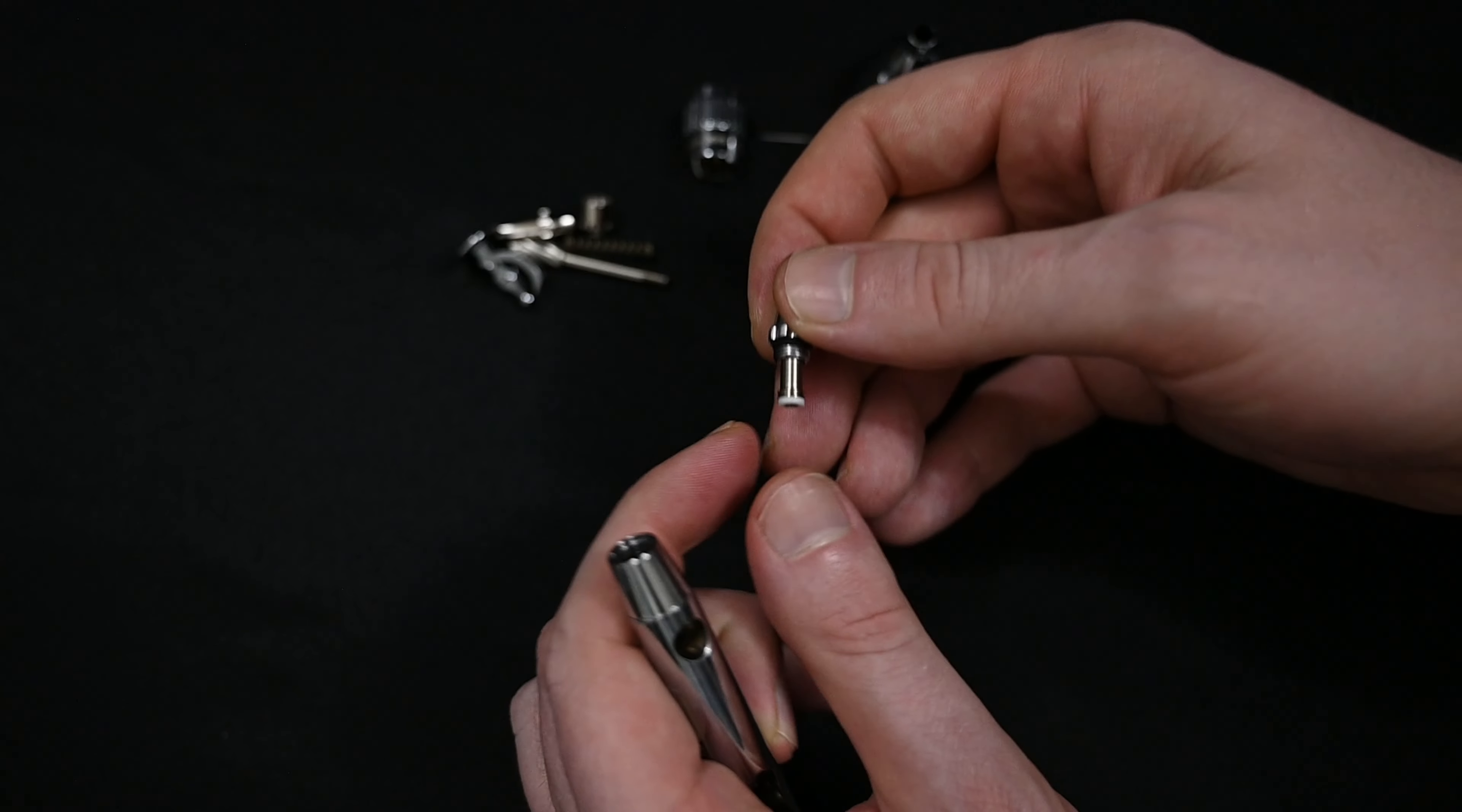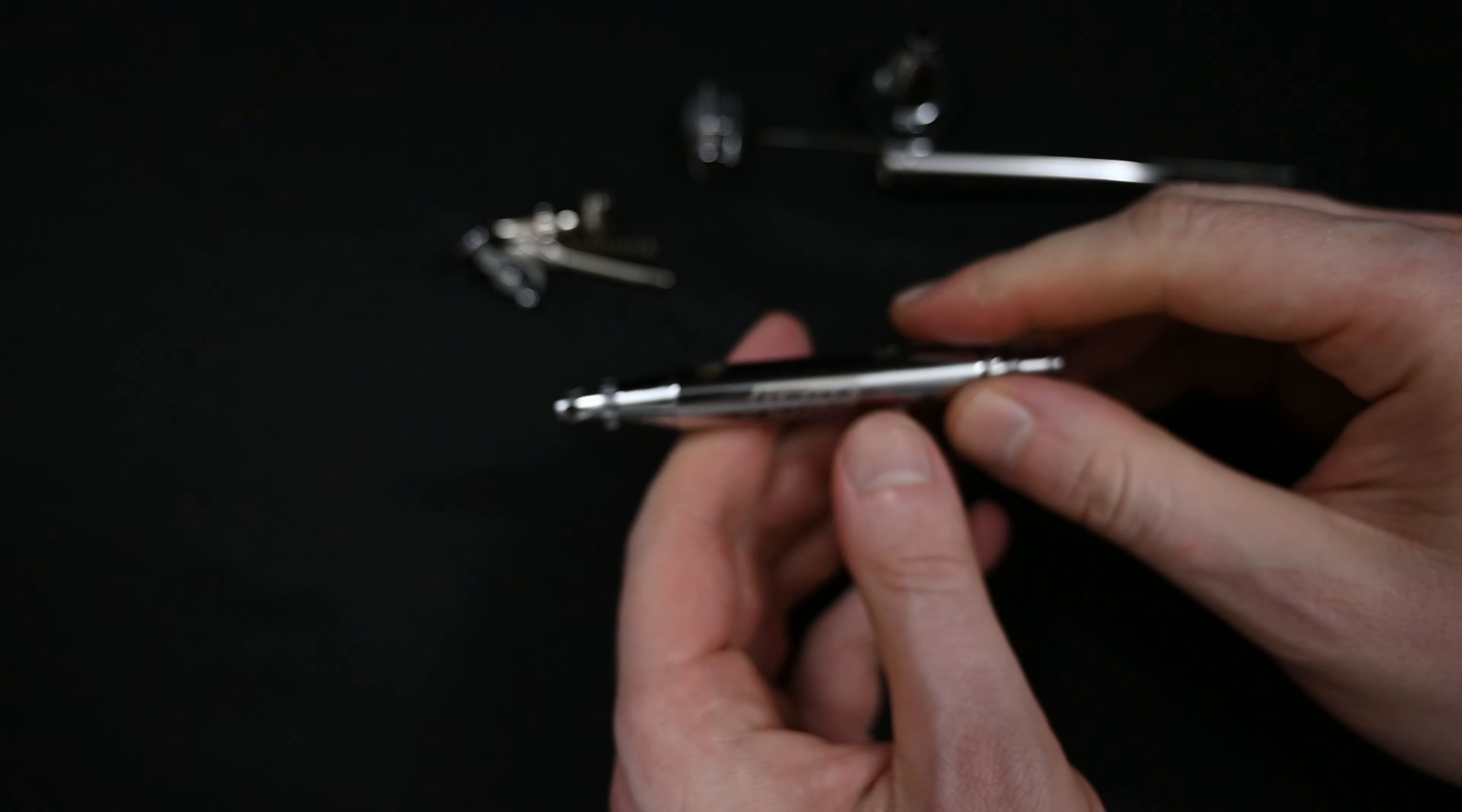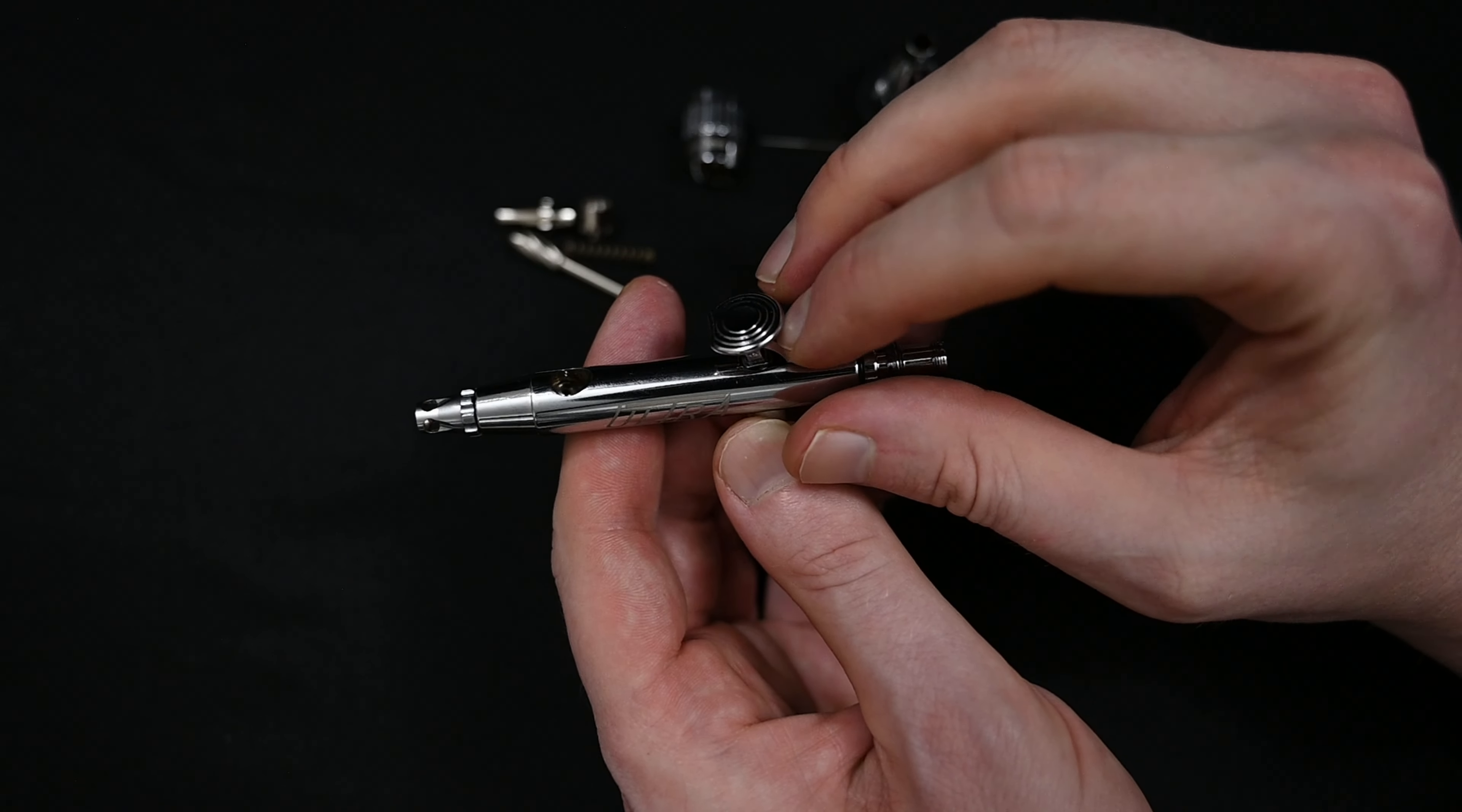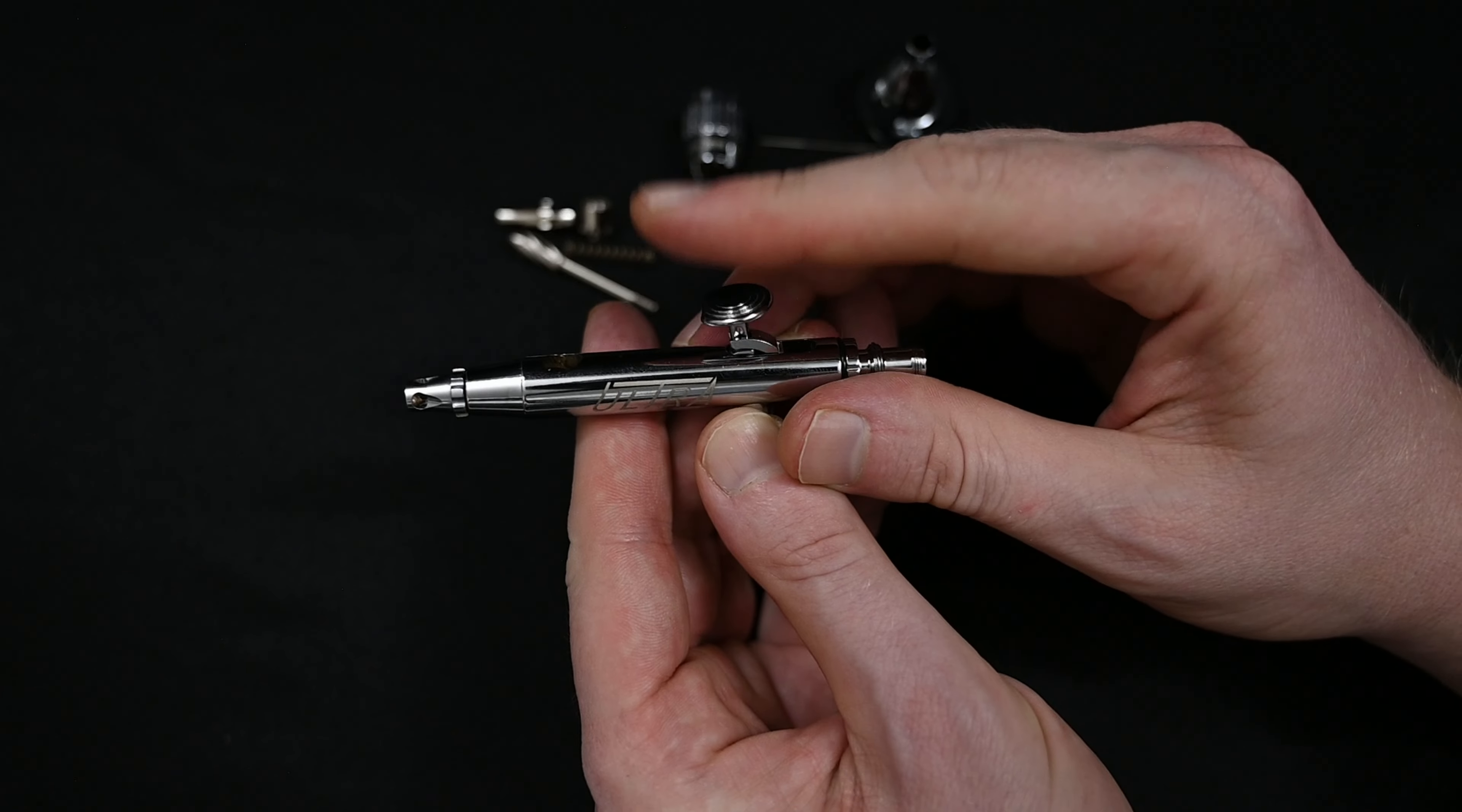To reinstall everything, it's just as easy as taking it apart. Just place this nozzle in, and then screw the cap on. Everything on an airbrush should always be hand tight, so you don't need any tools to put it back together. When placing the trigger back in, make sure the cutout is pointed toward the front, toward the nozzle. And then just press it down in place, making sure that you feel it pressing on that spring within the air piston.